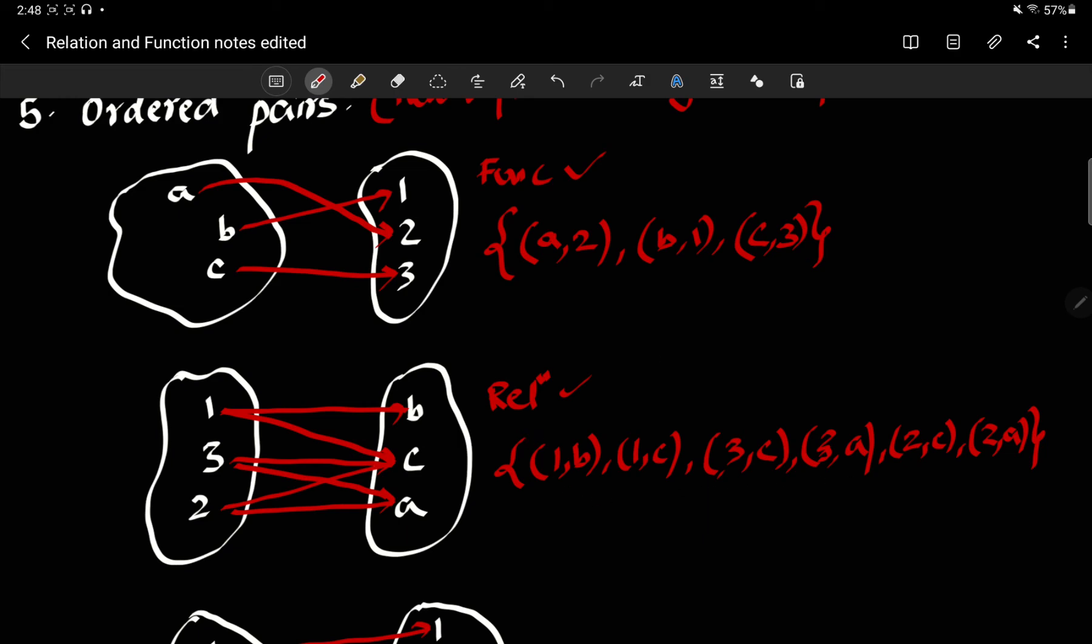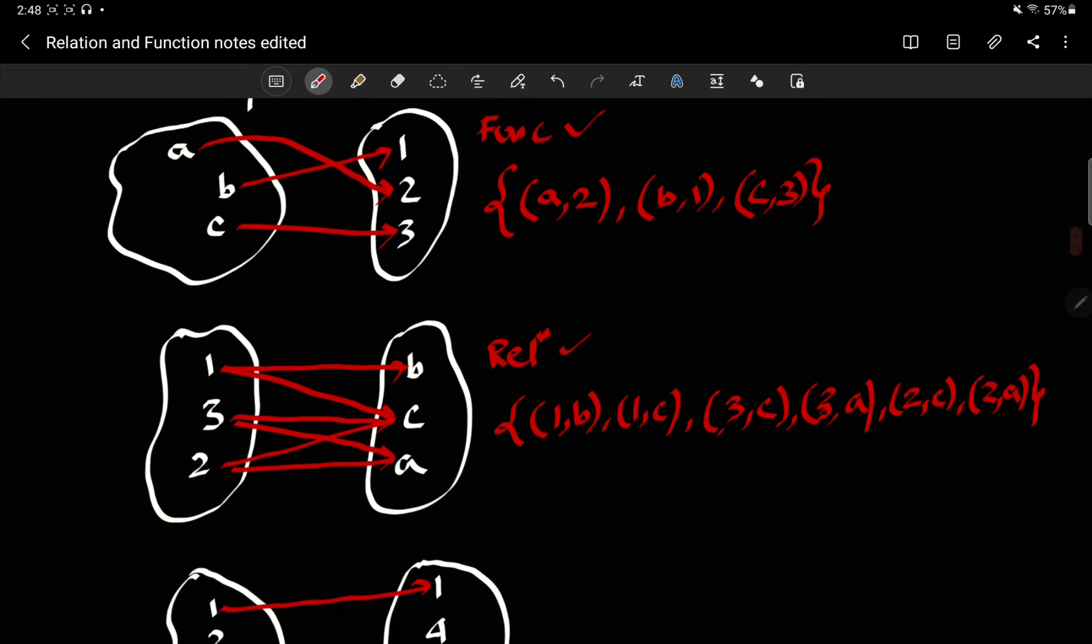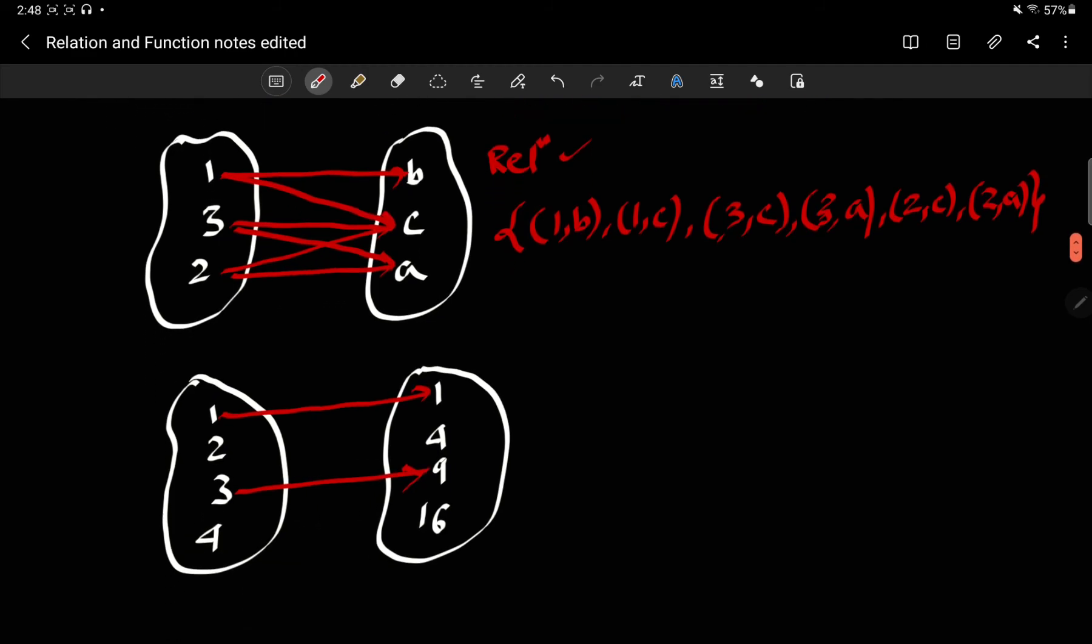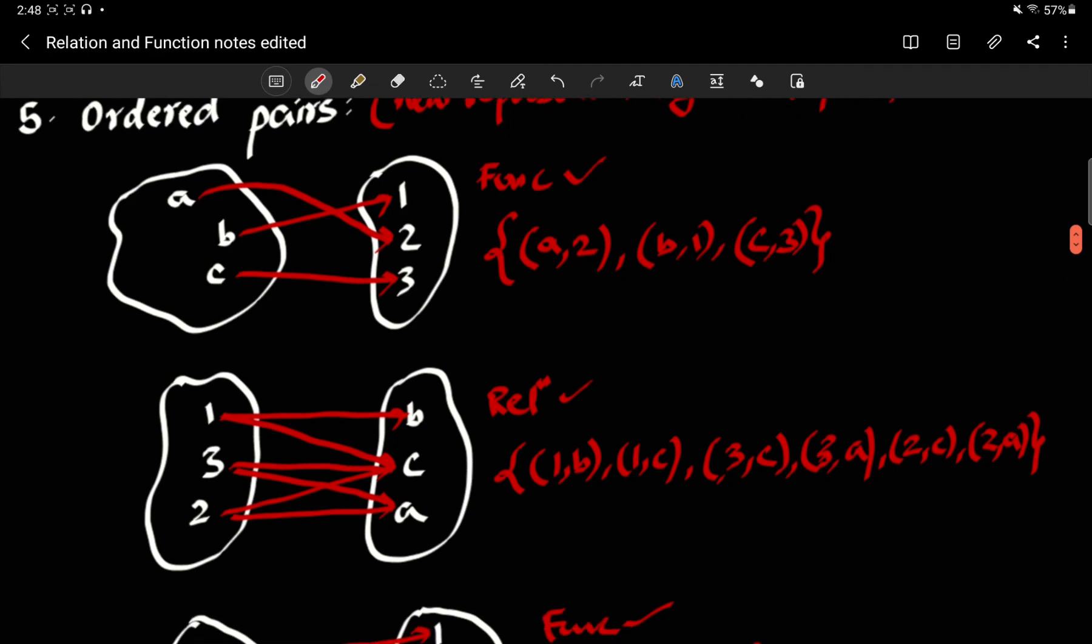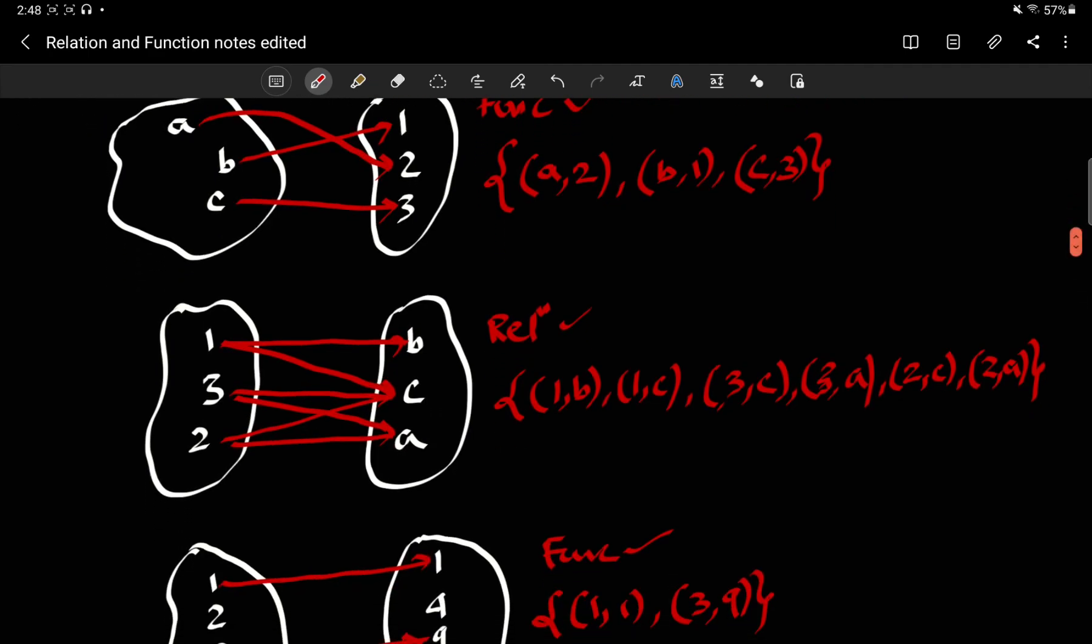So you can already see this is completely different, right? It's a relation, it's got multiple arrows coming out and all that. The second one here, this is still a function, because it does not violate the principle of not more than one line coming out of each point on the left. And as a pair, it's one one and three nine. Okay, so these are called ordered pairs.